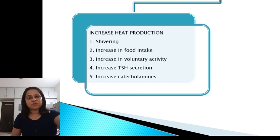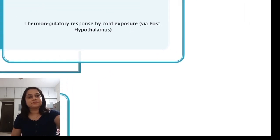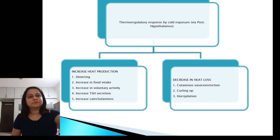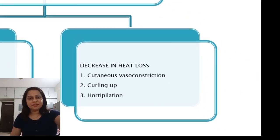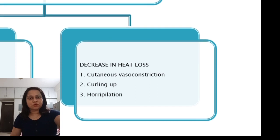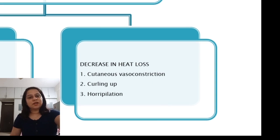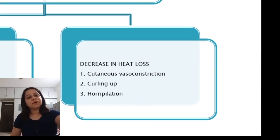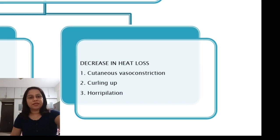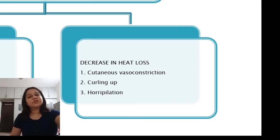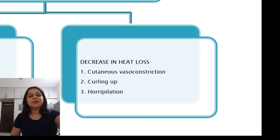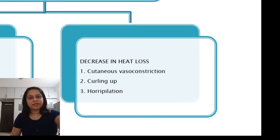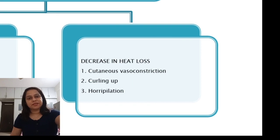Heat loss is decreased by cutaneous vasoconstriction, so blood flow is diverted from the peripheral parts of the body. Curling up reduces the body surface area, thus reducing heat loss out of the body, and by horripilation.